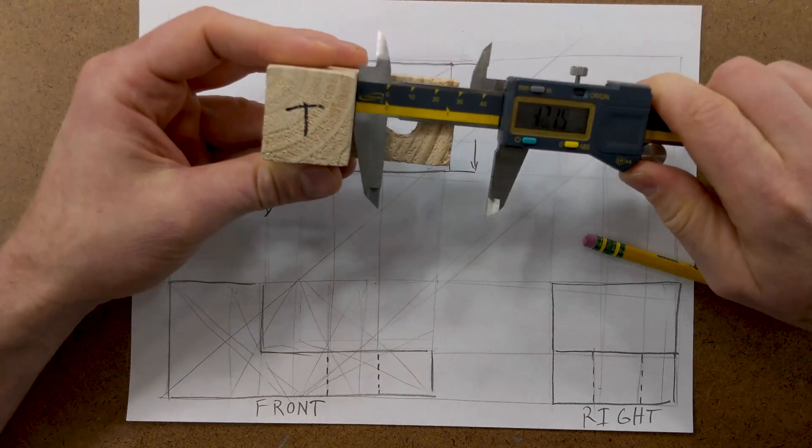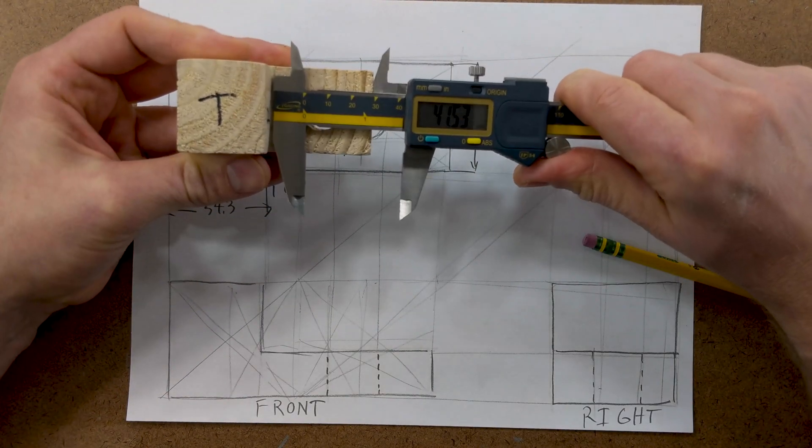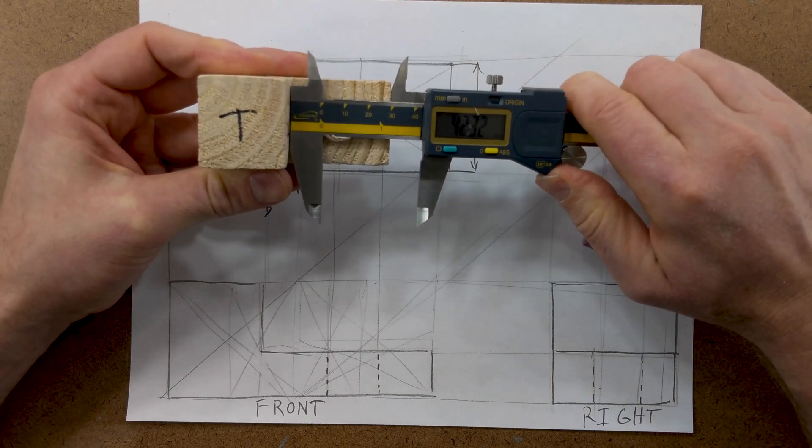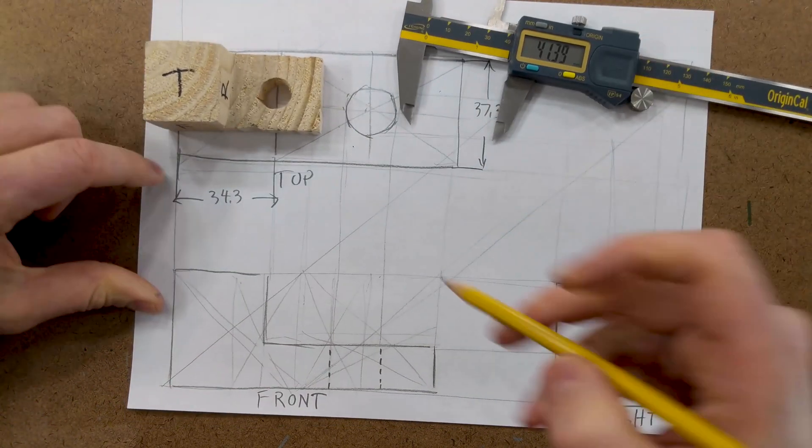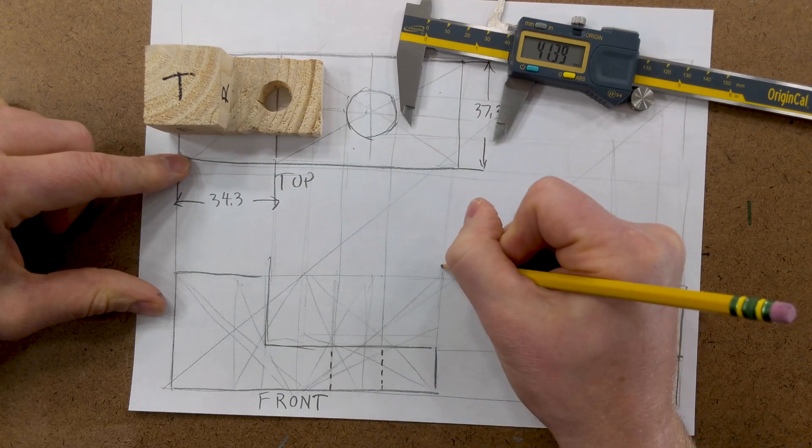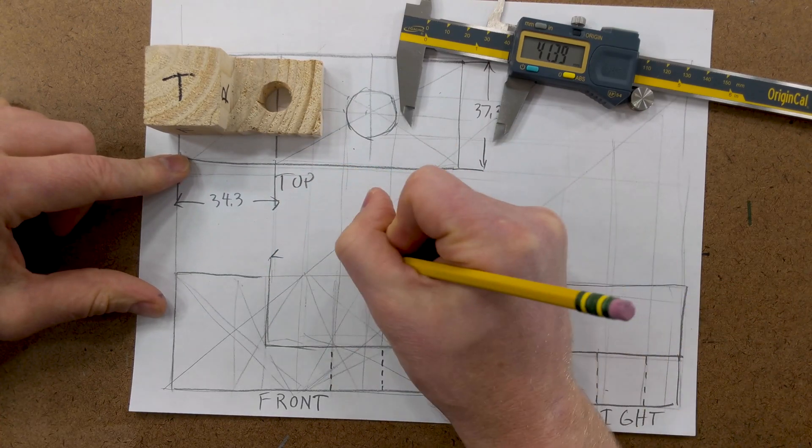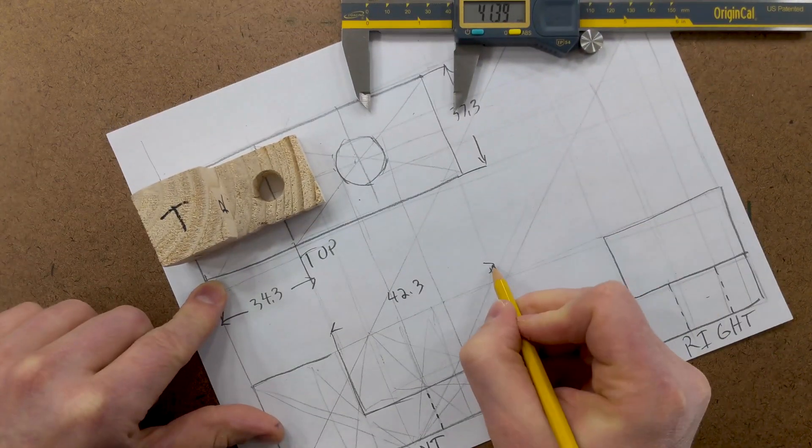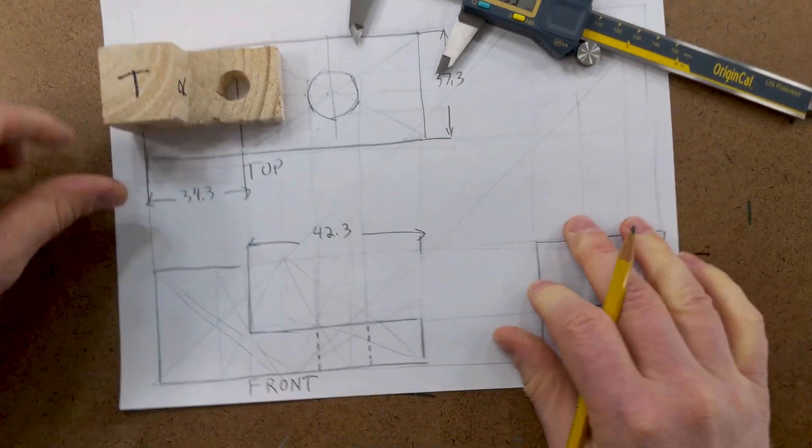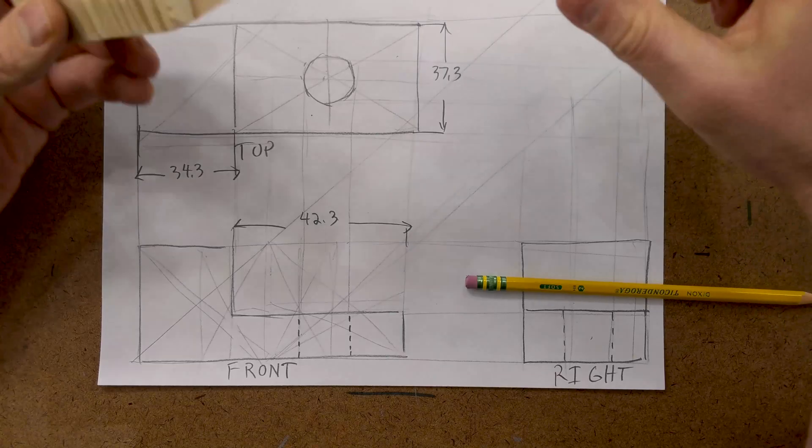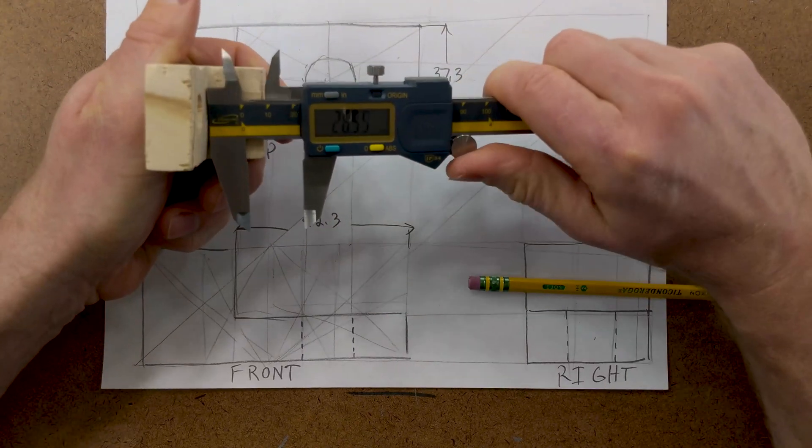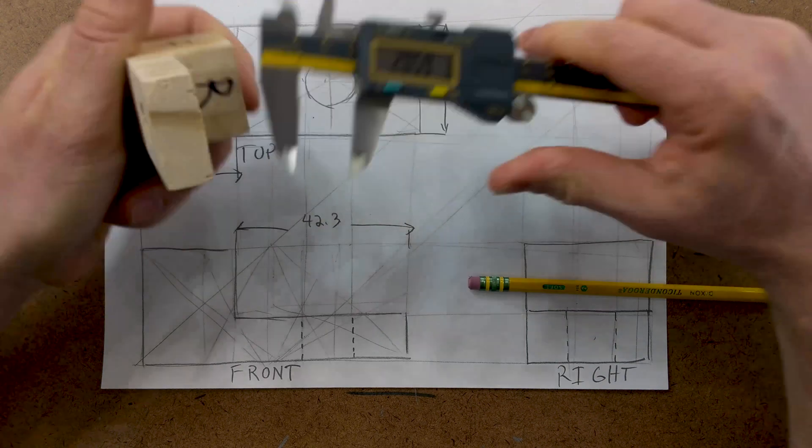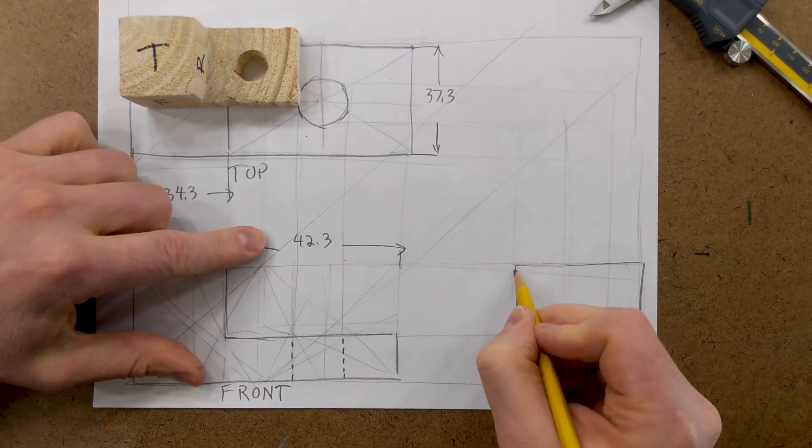We need to know this dimension here, and we can use the step on our calipers, so that's 20.5, and we can put that right here.